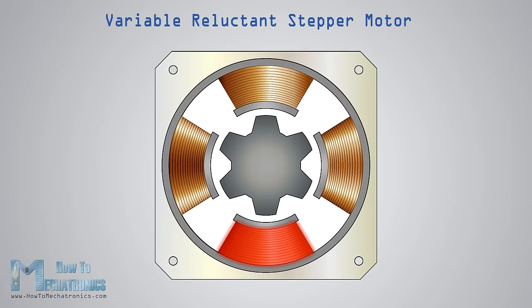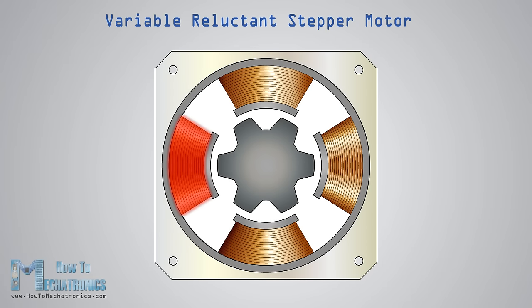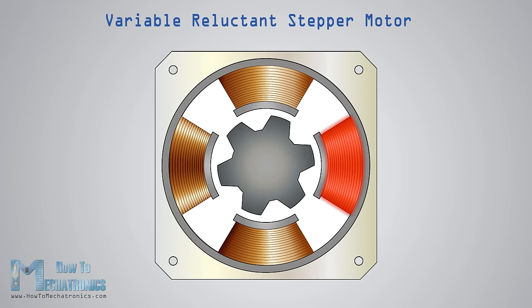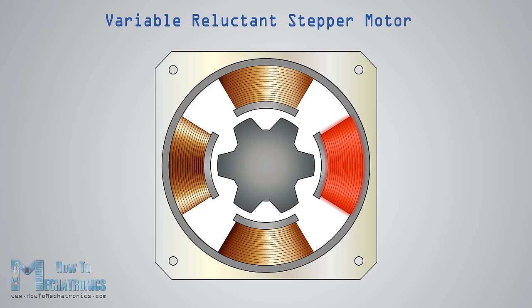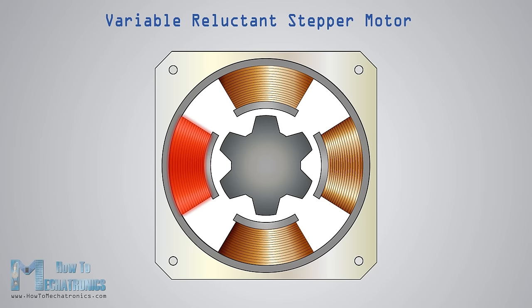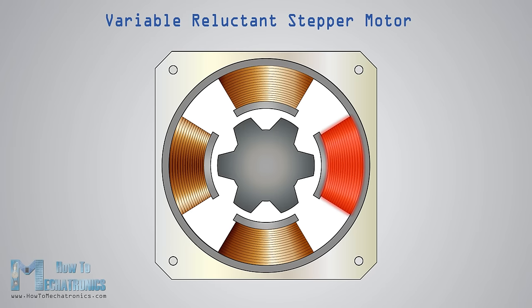The next type, the variable reluctant stepper motor, uses a non-magnetized soft iron rotor. The rotor has teeth that are offset from the stator, and as we activate the windings in a particular order, the rotor moves so that it has minimum gap between the stator and the rotor teeth.